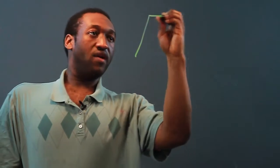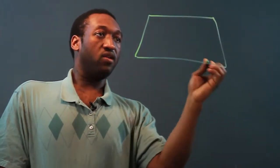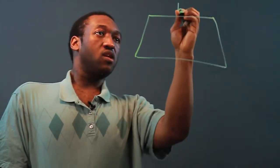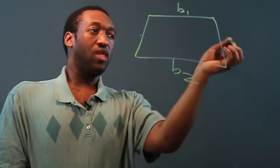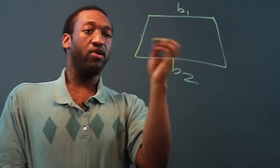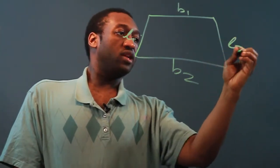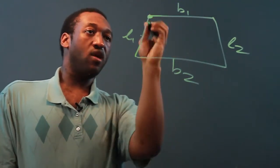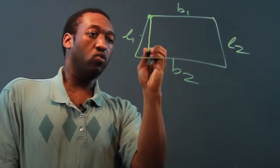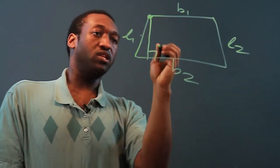Now for a trapezoid, we'll have two bases, which are parallel sides — base one and base two. Two legs, which are non-parallel: leg one, leg two. And from the corner of base one, we will bring down the height to base two.